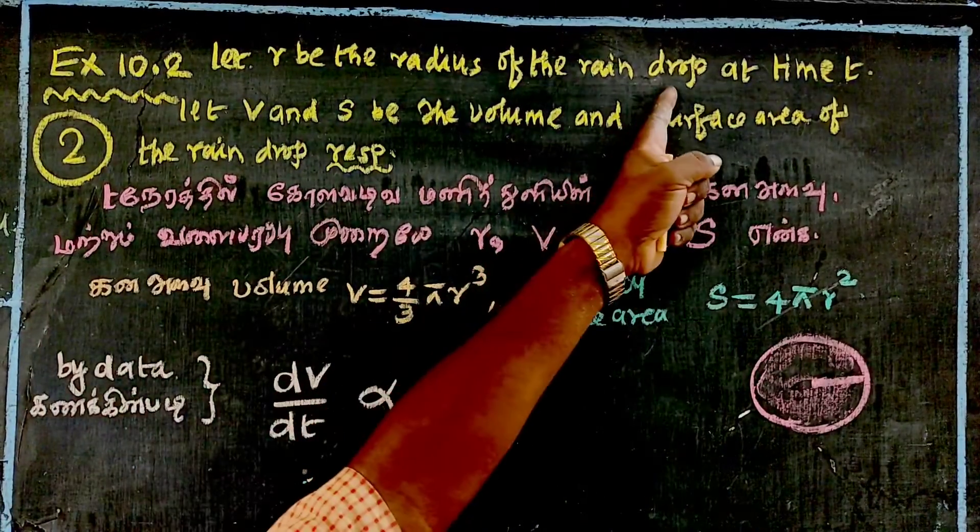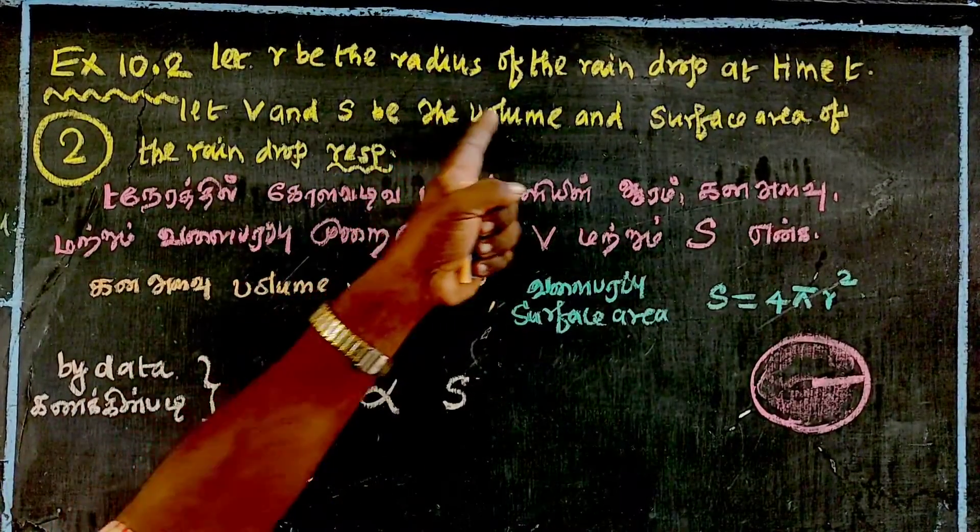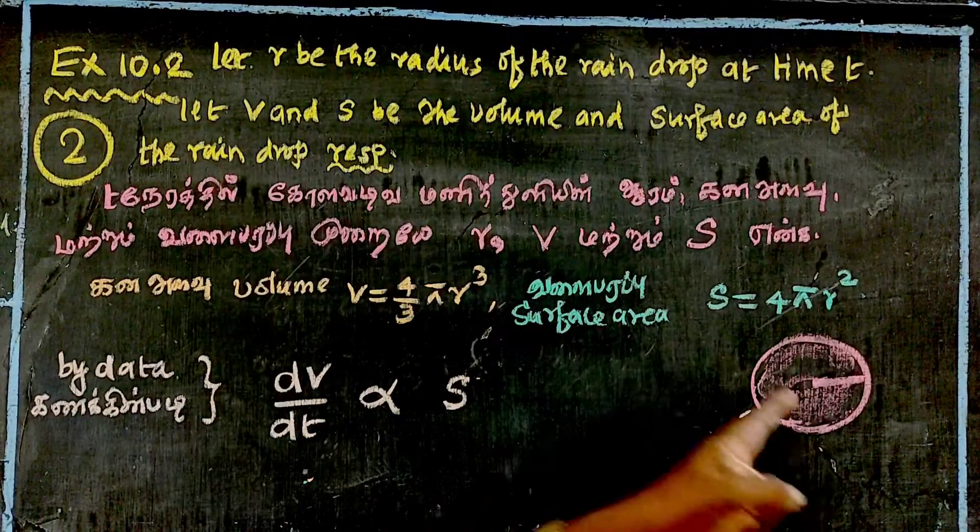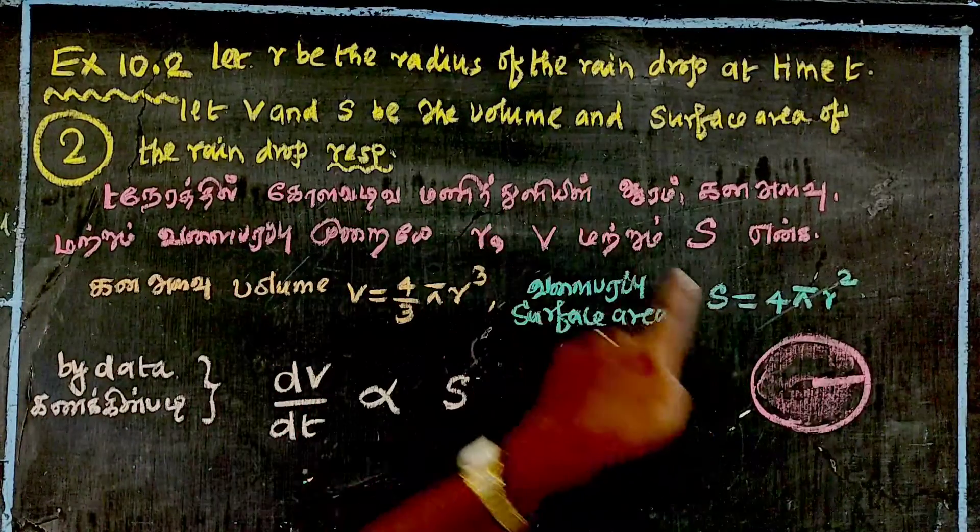Let r be the radius of the raindrop at time t. Let V and S be the volume and surface area of the raindrop at time t.